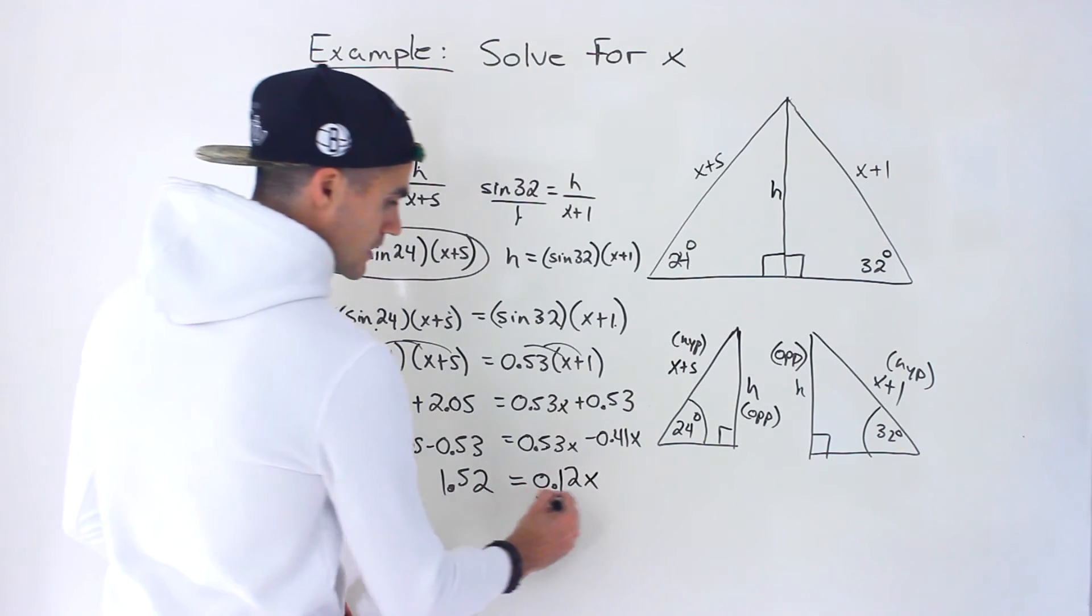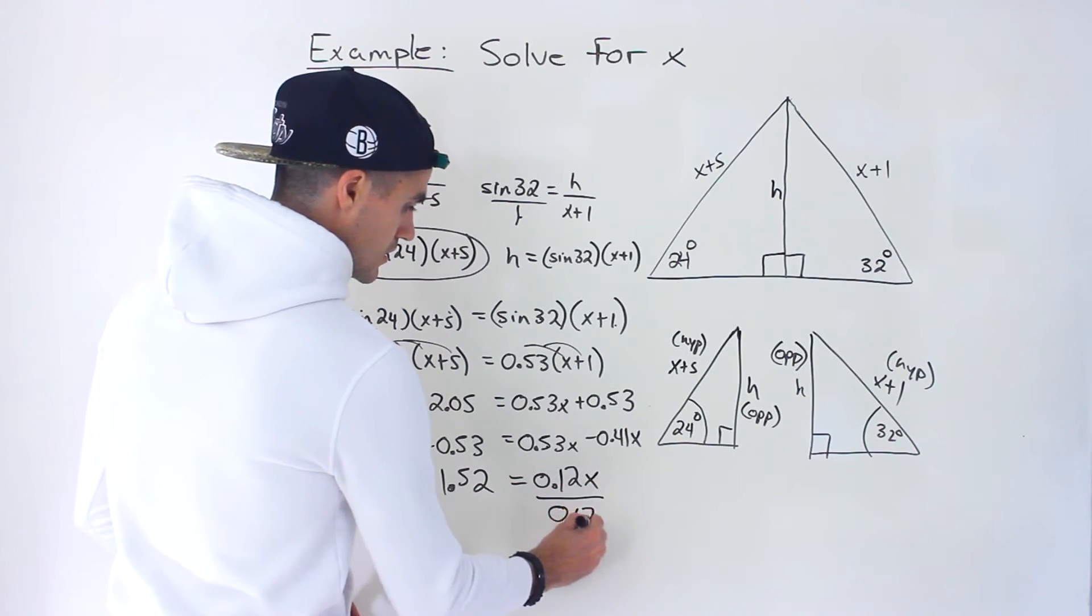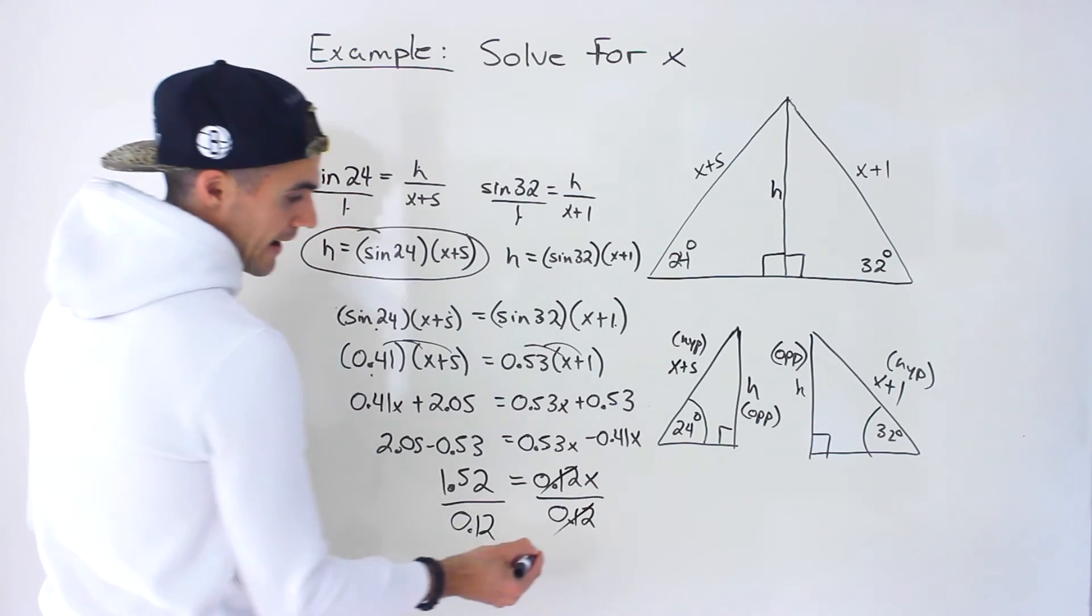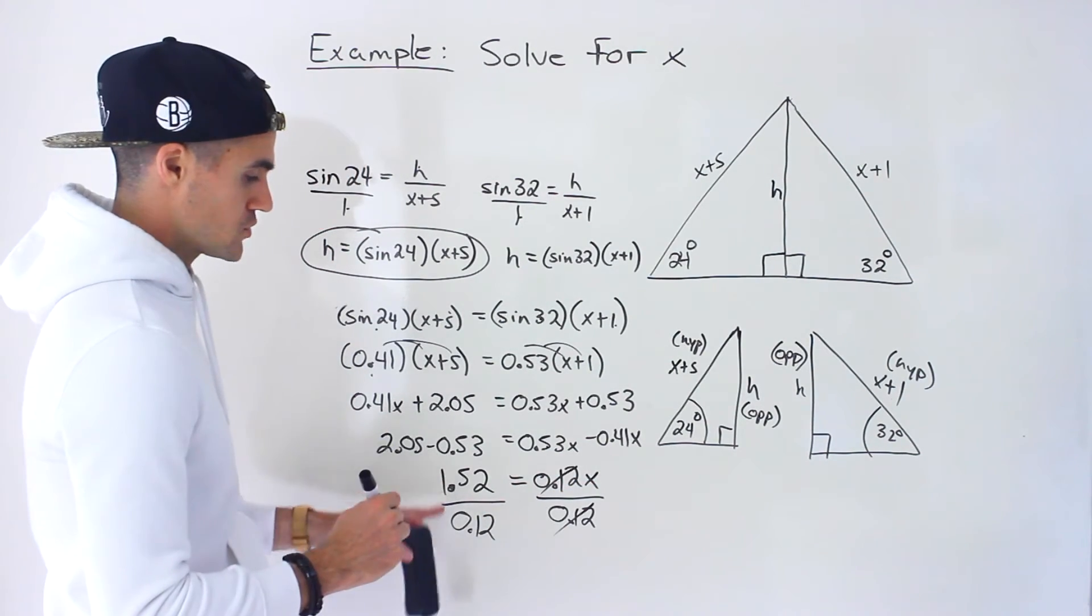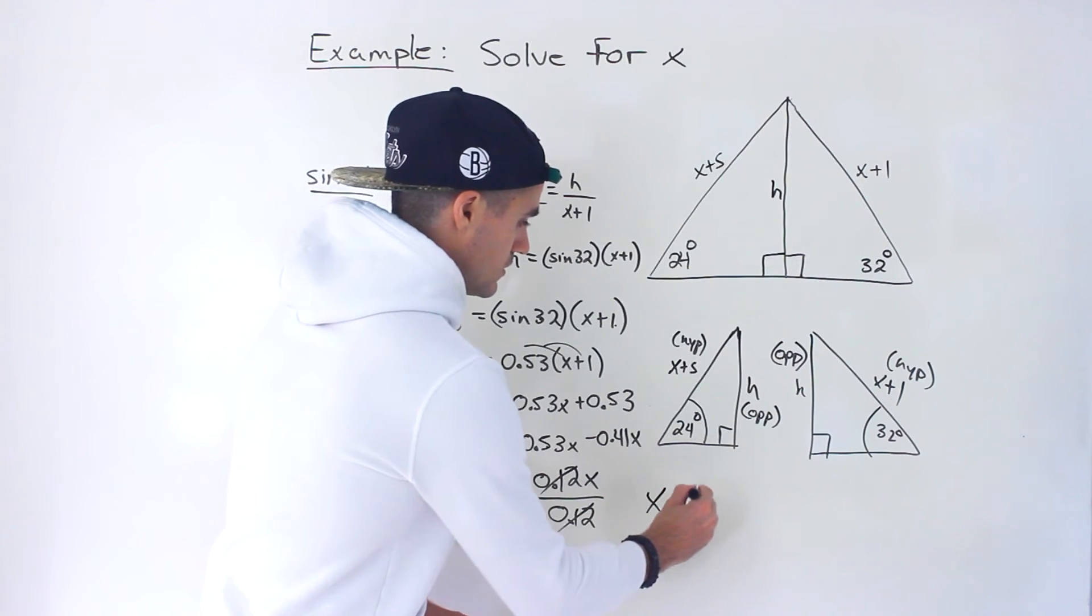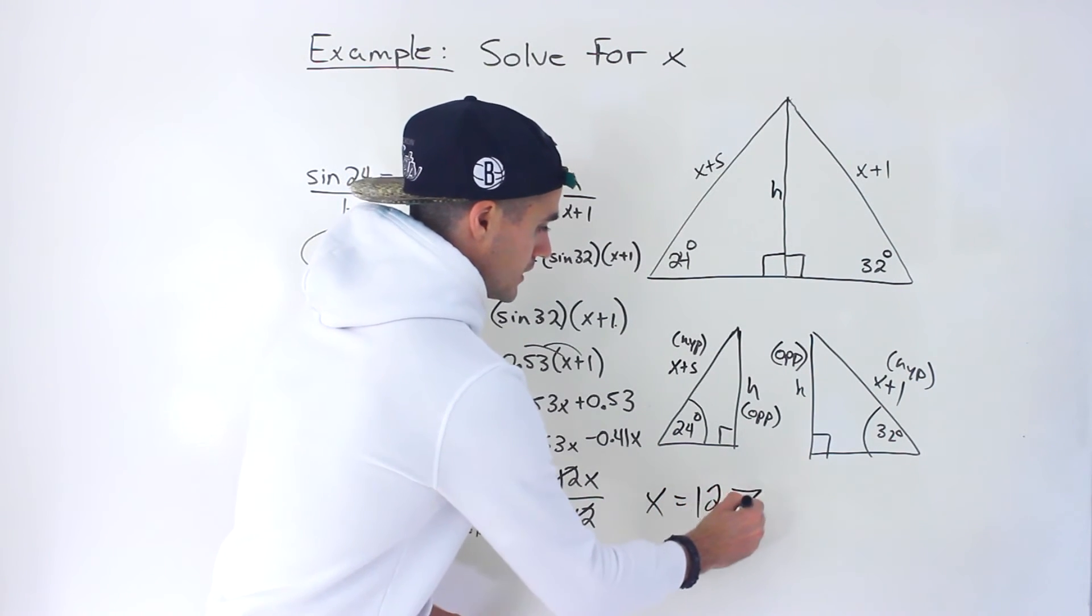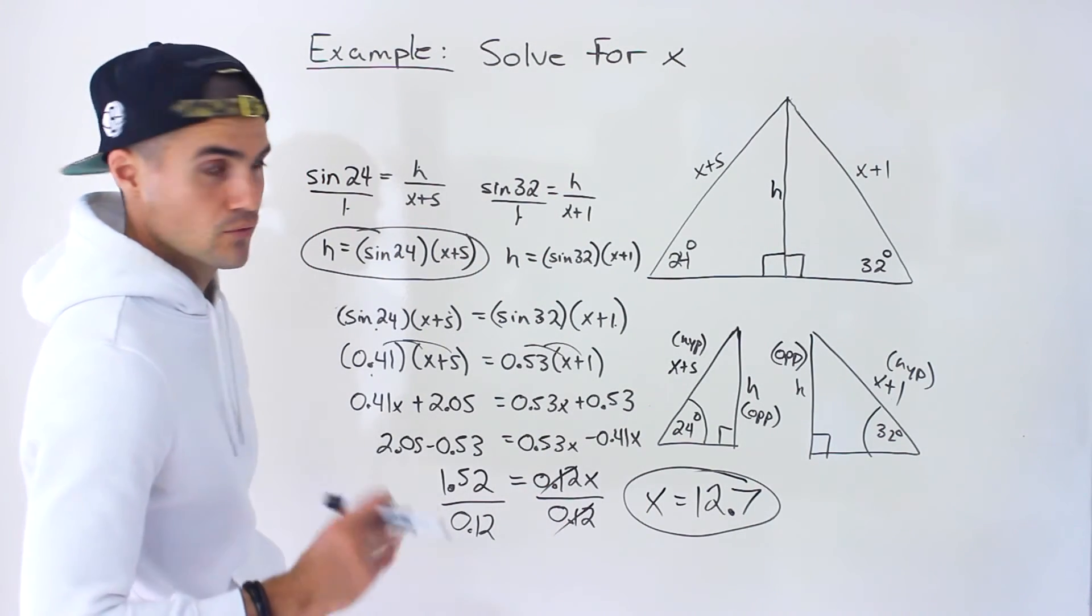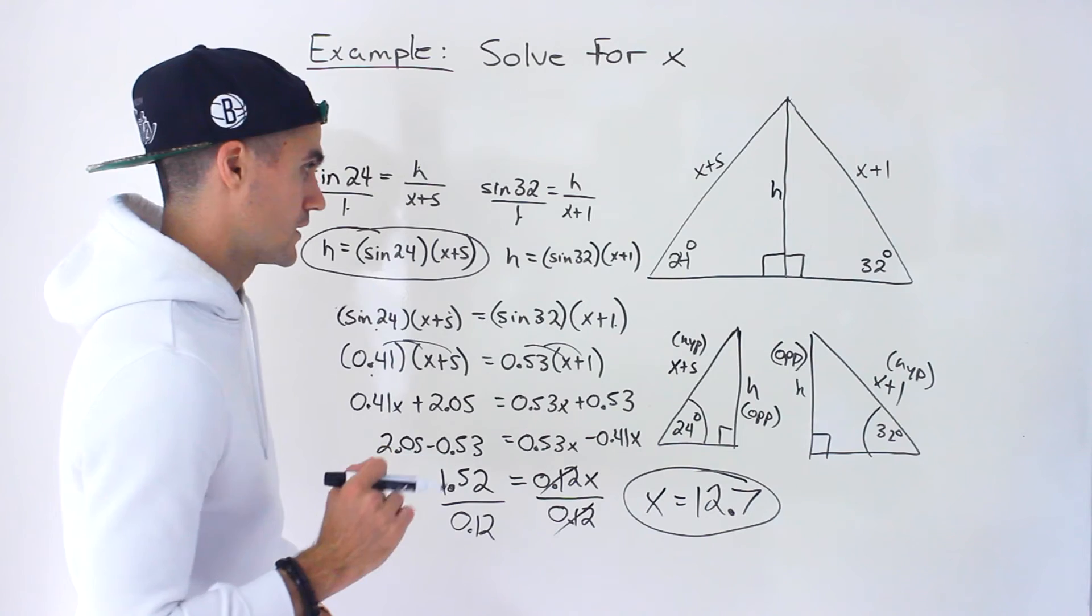Then to isolate for the x, we just divide both sides by 0.12, and that's going to give us the x by itself. When you do that algebra, 1.52 divided by 0.12, you'd get approximately an x value of 12.7, if we round it to one decimal place.